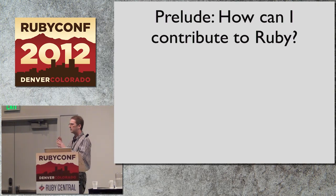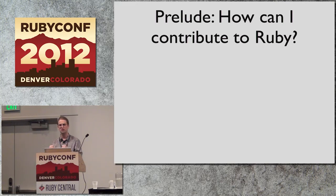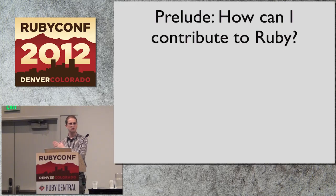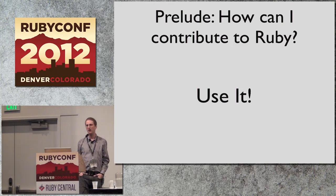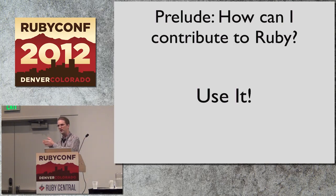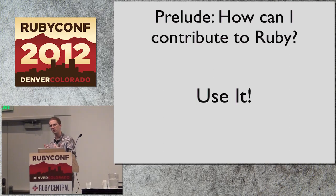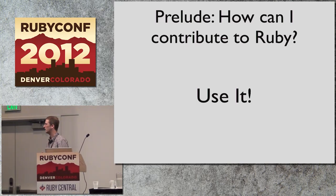You get some gung-ho programmer who discovers Ruby, gets really excited, and wants to contribute. 'How can I contribute to Ruby?' they say. Well, one thing I've found is the best way you can contribute to Ruby, or any open source project, is to use it. Don't go looking for the bugs — use Ruby, and the bugs will find you. That's actually a more efficient way of contributing to a project, because we write software not to write software, we write software to run software. So the more you run it, the better it's going to be.